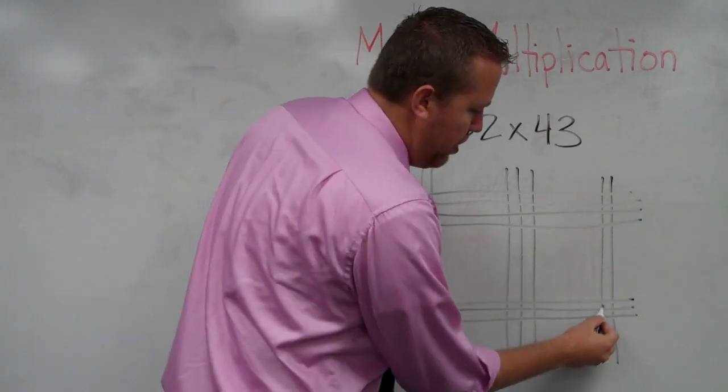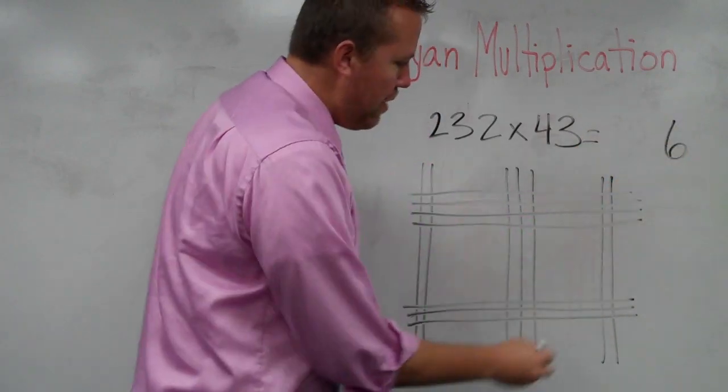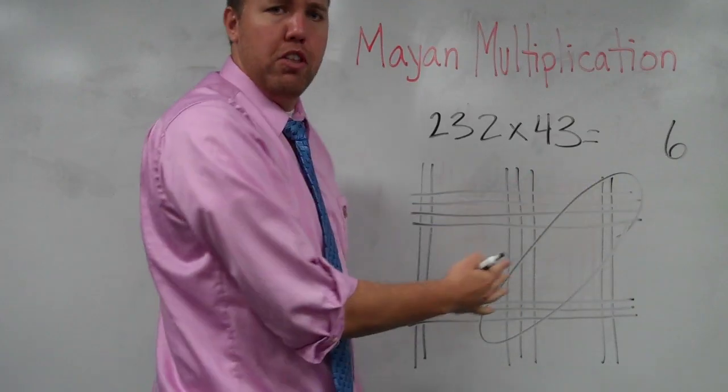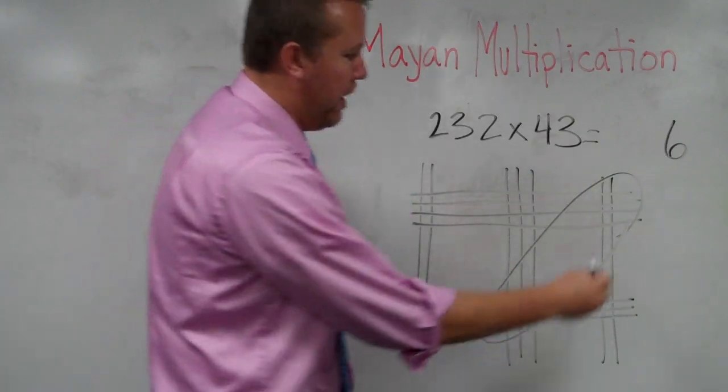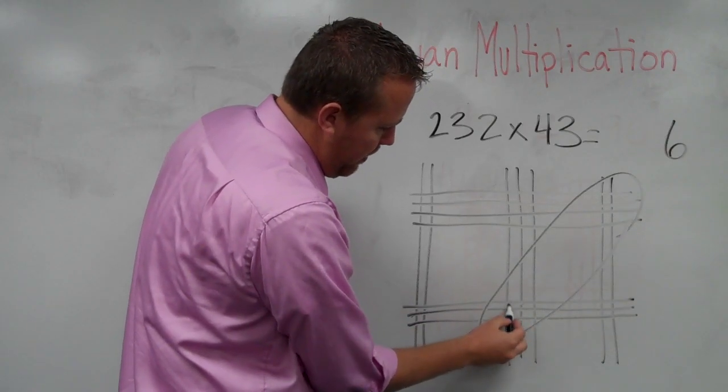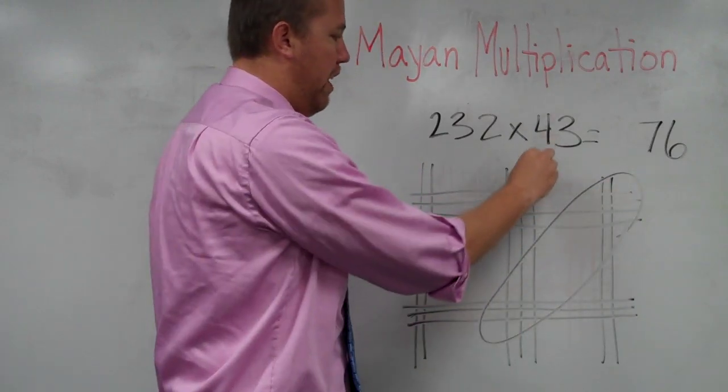Anyway, we start in the bottom right-hand corner. 1, 2, 3, 4, 5, 6 intersections. Then we come to this. At a 45 degree angle is about what you're looking at. And we count. 1, 2, 3, 4, 5, 6, 7, 8, 9, 10, 11, 12, 13, 14, 15, 16, 17. Put the 7, carry the 1.